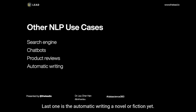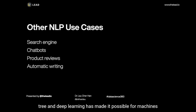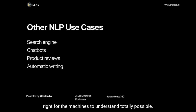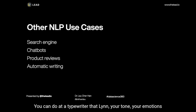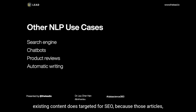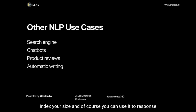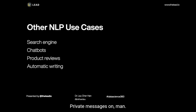The last application is automatic writing. The machine can't yet write a novel or fiction that will become a bestseller, but the rise of GPT-3 and deep learning has made it possible for machines to write content automatically — at least content that machines can understand. You can build an AI writer that learns your tone and emotions and helps you write content, or recycle existing content targeted for SEO — because those articles are meant for Google robots to read in order to index your site. You can also use it to respond to standard inquiries on Facebook or Instagram rather than manually managing private messages all the time.